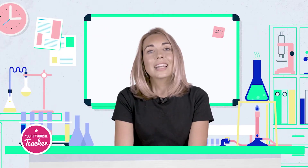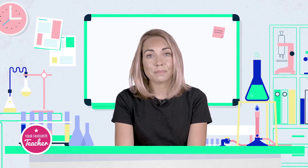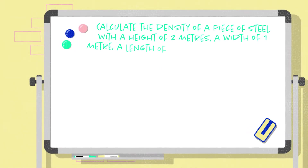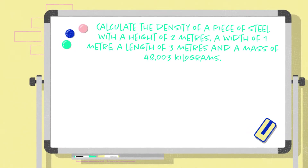Let's have a little look at an example question. Calculate the density of a piece of steel with a height of 2 metres, a width of 1 metre, a length of 3 metres, and a mass of 48,003 kilograms.